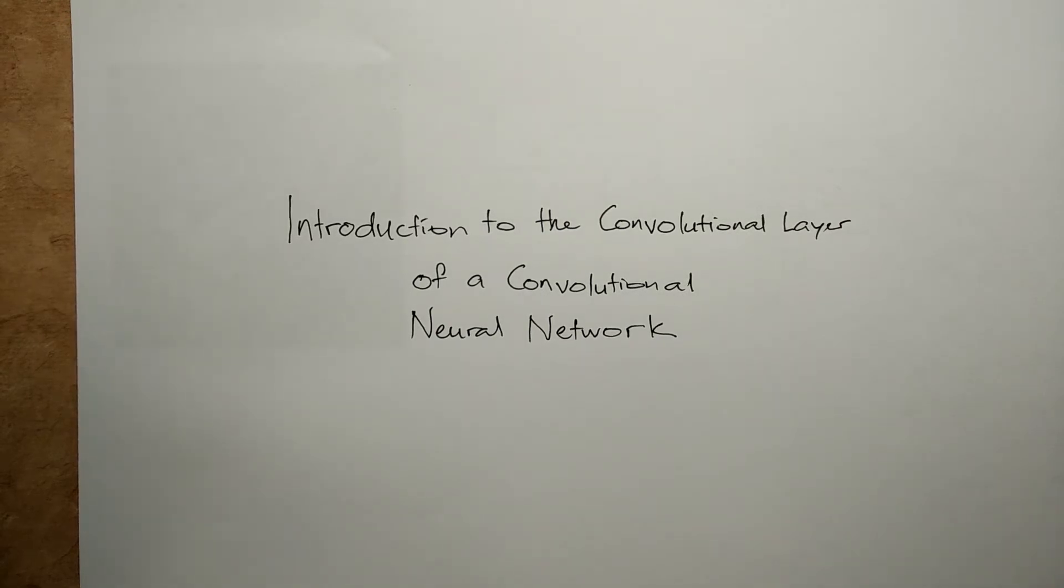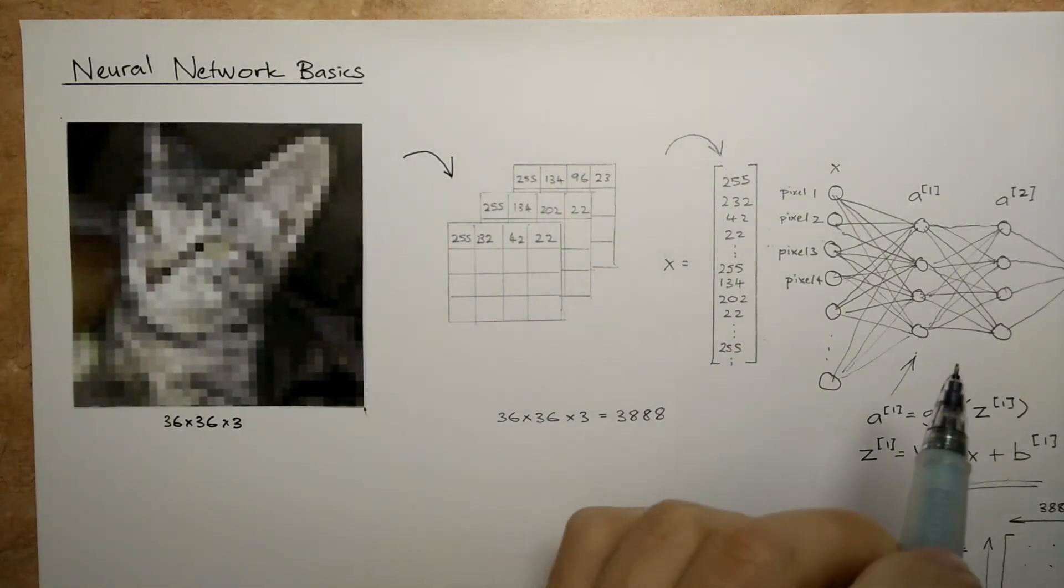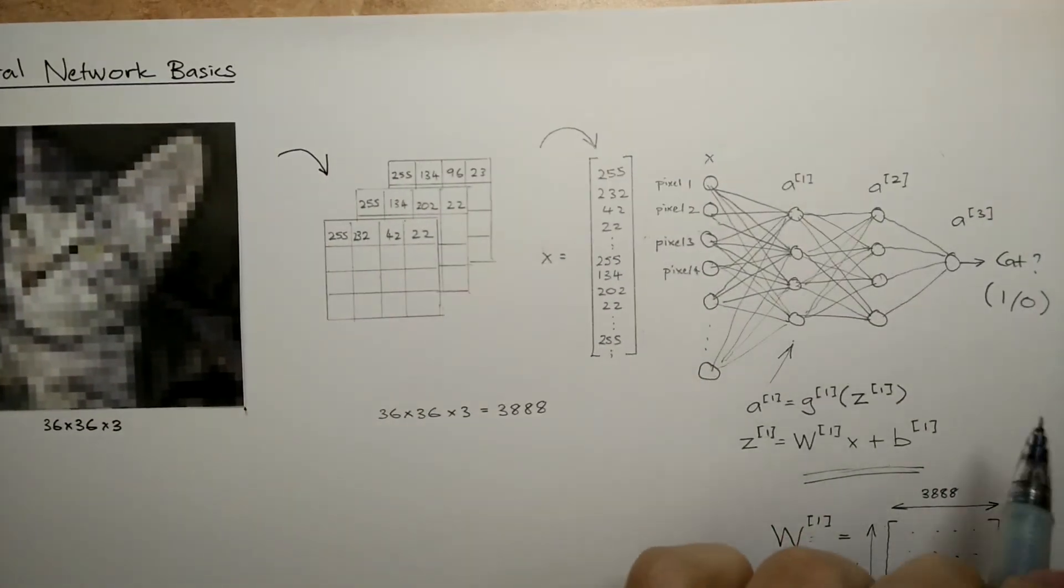Before we get to that, let me give you a primer on how our conventional or fully connected neural network works. Let's say we have an image of a cat, and we want our neural network to determine whether or not that image contains a cat.